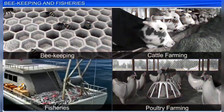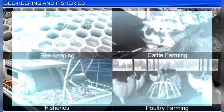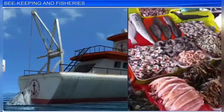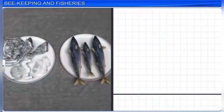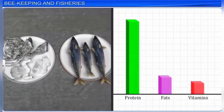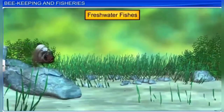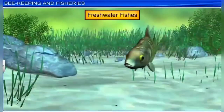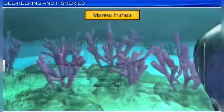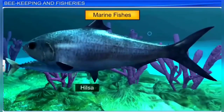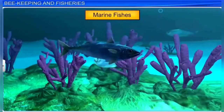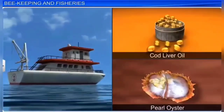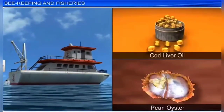Fisheries are another part of animal husbandry, relating to the rearing, catching, and selling of aquatic animals such as fish and shellfish. As fish contain more proteins and less fat, they are preferred to other meats. Commonly eaten freshwater fish include katla, rohu, and common carp, while marine fish include hilsa, mackerel, and pomfret. Fisheries also provide products such as cod liver oil — a nutritional supplement — and pearl oysters that have commercial value.